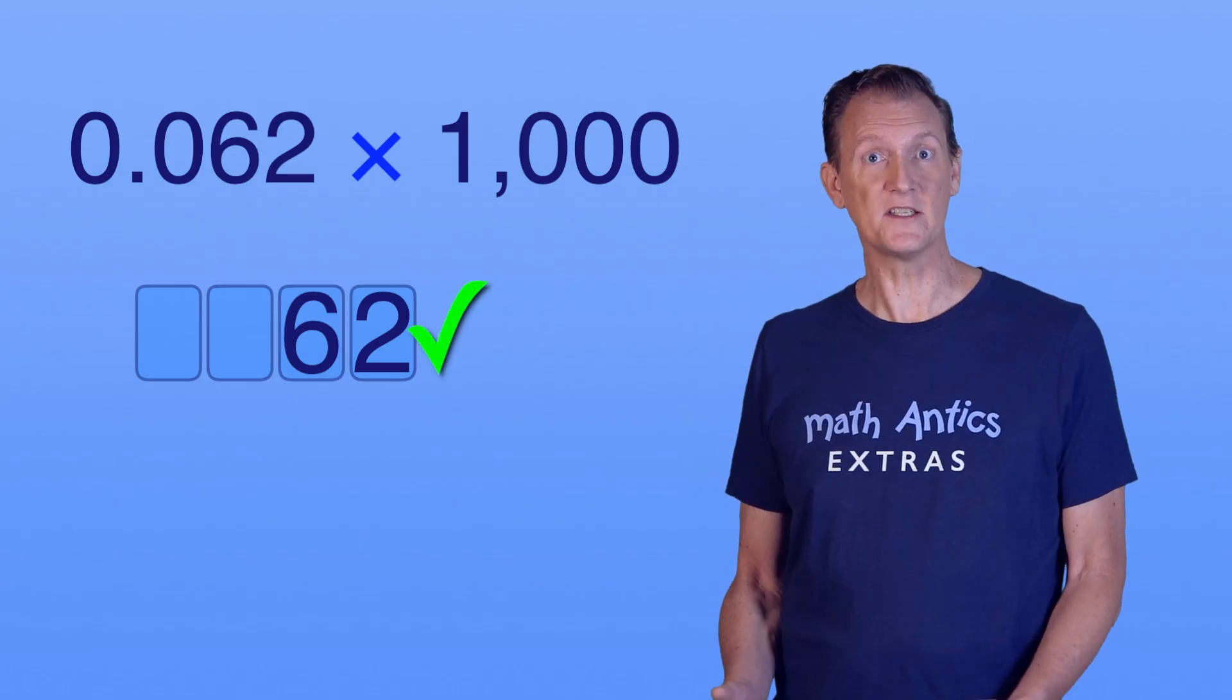Now our number is 62. So shifting the number places worked. 0.062 times 1000 is 62.